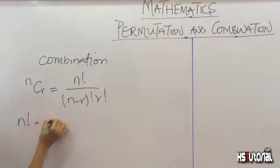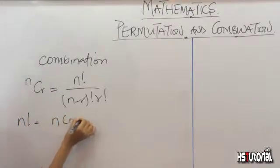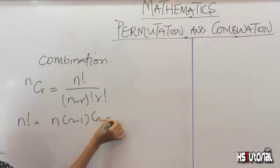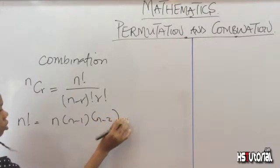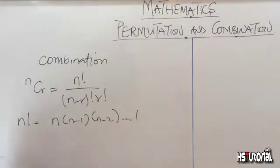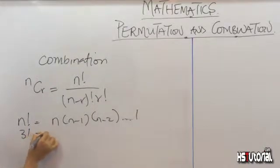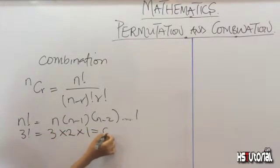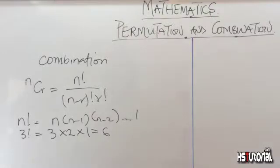Remember what we mean by factorial: n factorial simply means n times (n minus 1) times (n minus 2) until you get to 1. So 3 factorial simply means 3 times 2 times 1, which gives us 6.